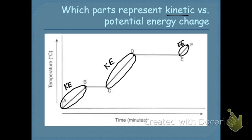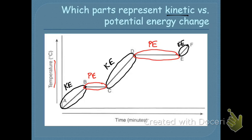What about potential energy — the stored energy? Any time the curve is flat, those sections represent potential energy changing. Why isn't it measured by temperature? Because temperature measures kinetic energy. So any time it changes, kinetic energy changes. But potential energy is measured differently — it's not measured through temperature. When it flattens out, the water or substance is still being heated. It's kind of weird because you'd think: why would it flatline if heat is still being added? What's exactly happening at the potential energy sections — why is it flattening?